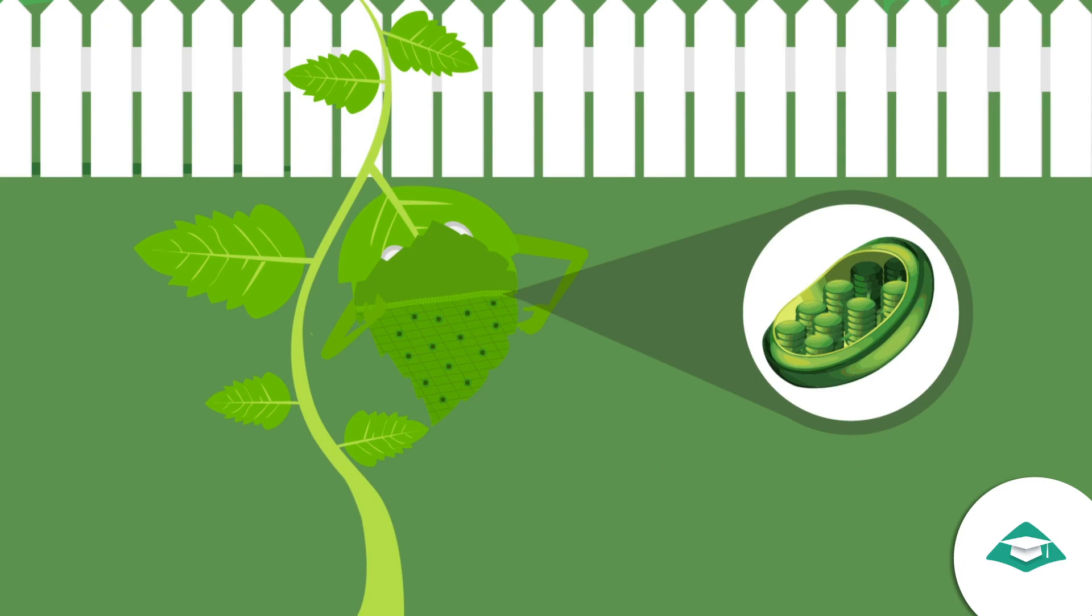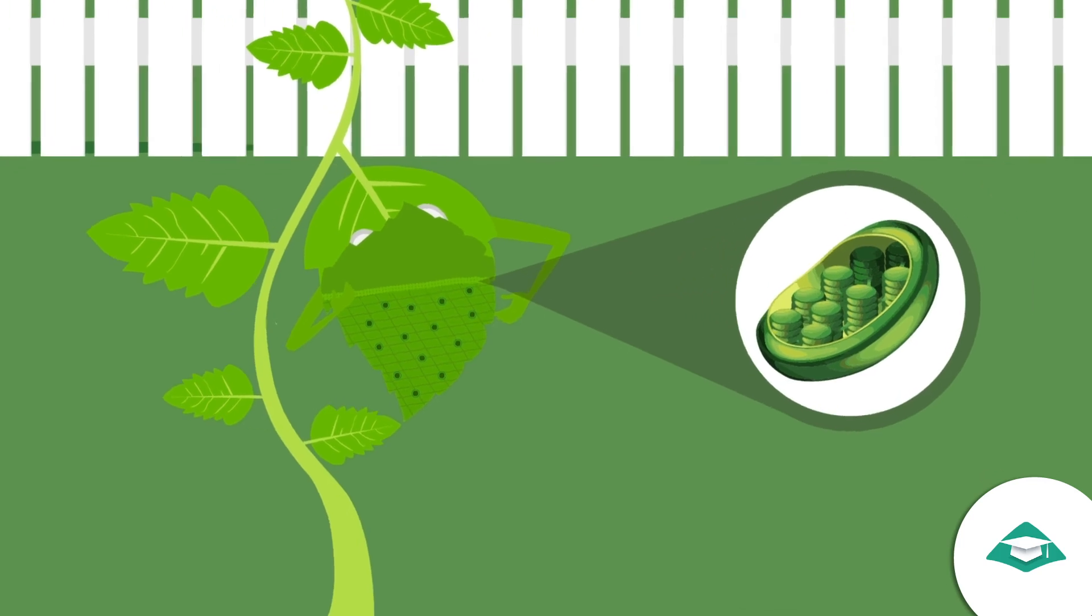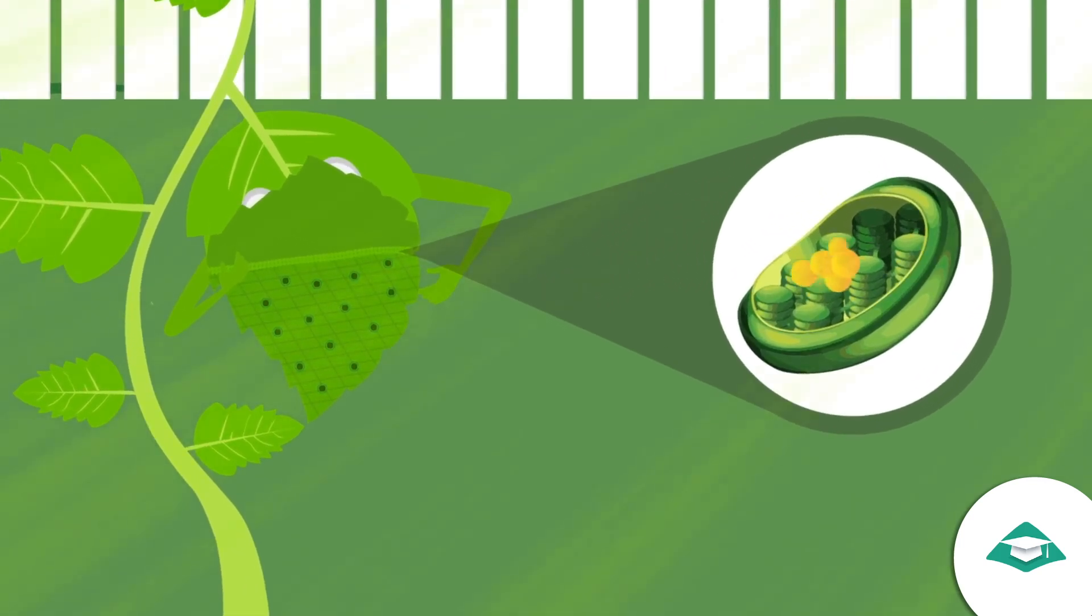These chlorophyll-containing cells of plants prepare carbohydrates with the help of carbon dioxide and water in the presence of sunlight.